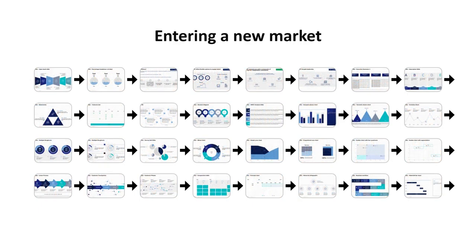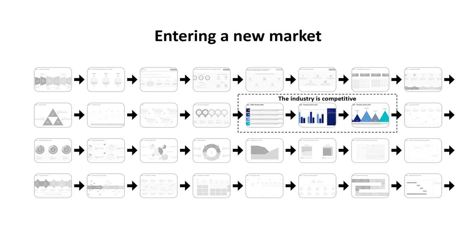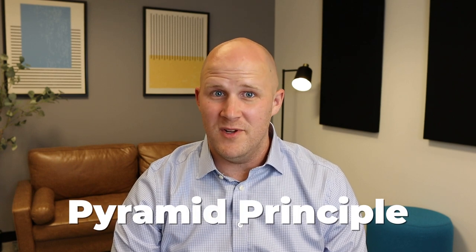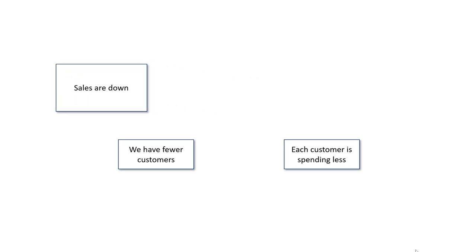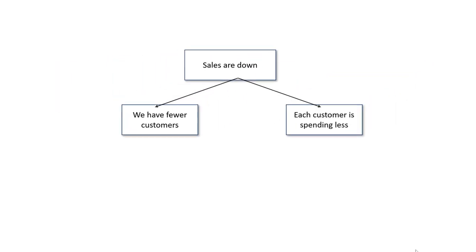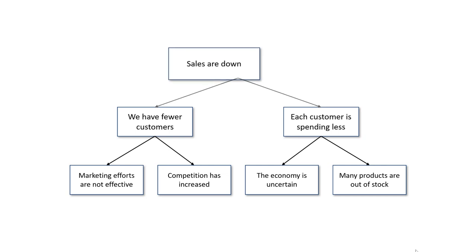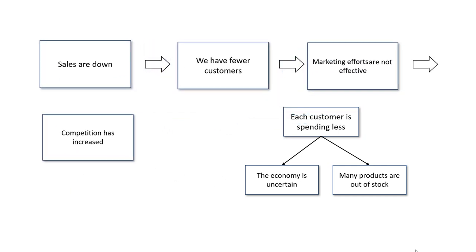The story of a presentation works in much the same way, with each individual slide contributing to the section, and multiple sections working together to form a presentation. The important part is to make sure your audience always understands where they are in the story, so they can understand why that particular part matters. In business presentations, a good way to do this is with the pyramid principle—a method for communicating information where you start with the main idea first, then follow that up with supporting points. For example, my main point might be that sales are down, then my supporting points could be that we have fewer customers and those customers are spending less per transaction. Laying it out this way makes it easy for the audience to understand where they are and how they got there, because one slide flows to the next in a way that's natural and easy to follow.